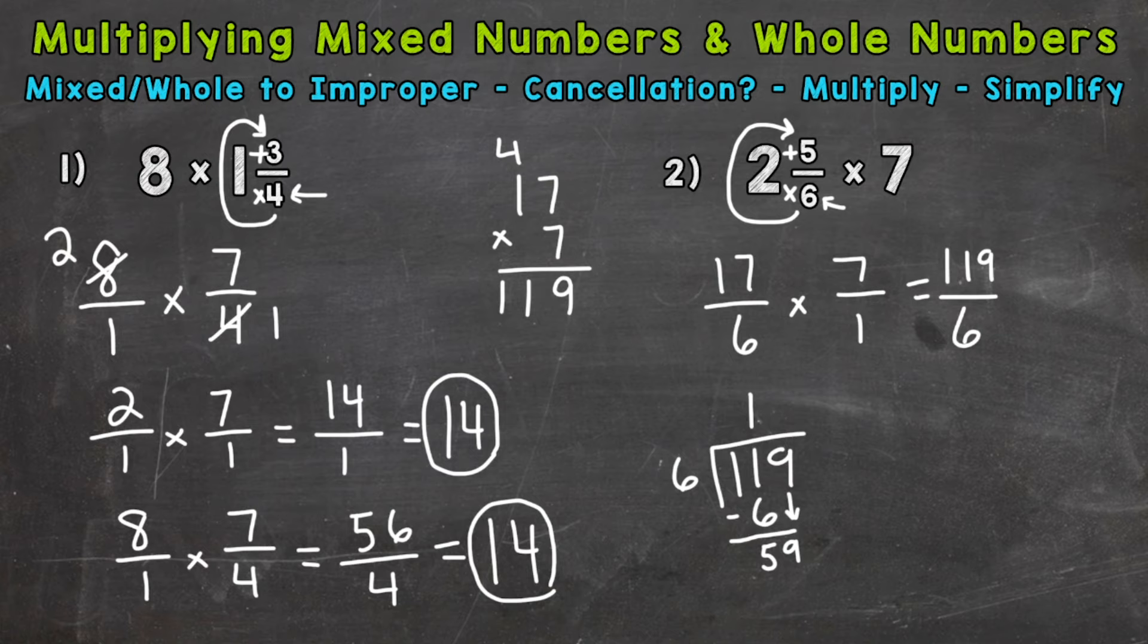And we have 59 divided by 6 now. So how many whole groups of 6 out of 59? 9. That gets us to 54. 9 times 6 is 54. Subtract, we get a remainder of 5. So 19, remainder 5.